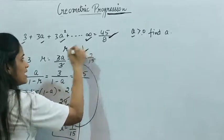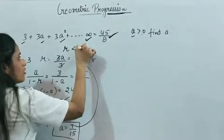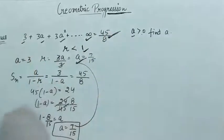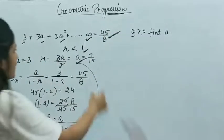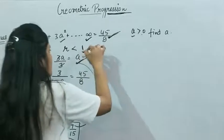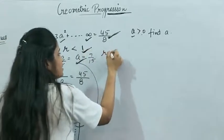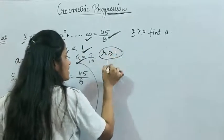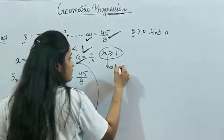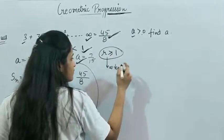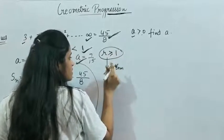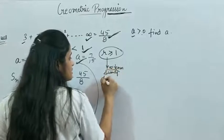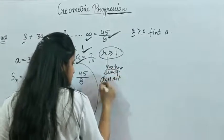The common ratio r = 7/15 is indeed less than 1, which is consistent because the sum of infinite terms exists. When r is greater than or equal to 1, the sum of infinite terms does not exist.